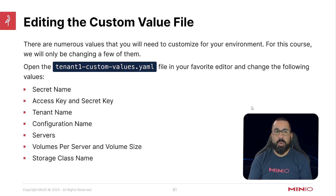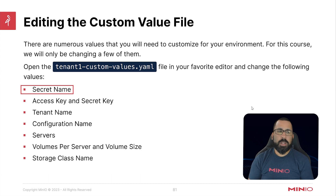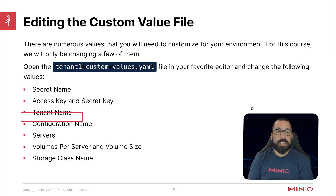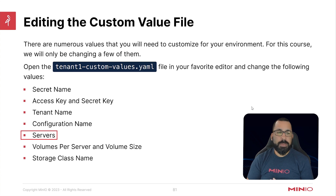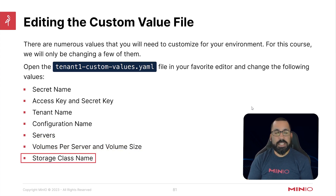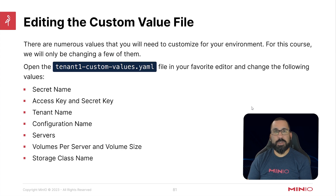We're going to open up the tenant1-custom-values.yaml that we created and update a few things: the secret name, the access key and secret key, the tenant name, the configuration name, the number of servers, the volumes per server and volume size, and the storage class name. Before going any further, let's jump over and take a look at this file and see those different fields that we're going to edit.